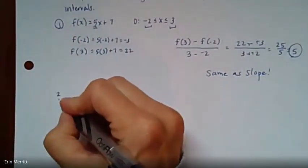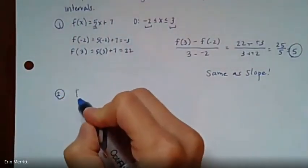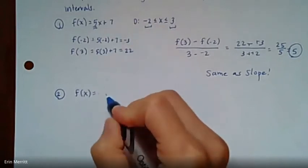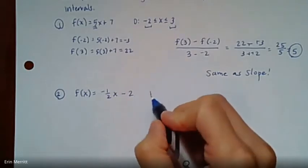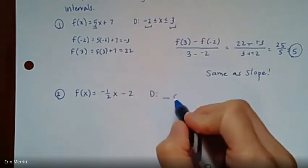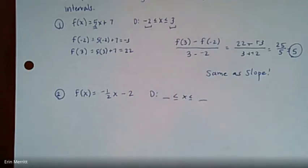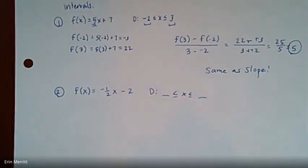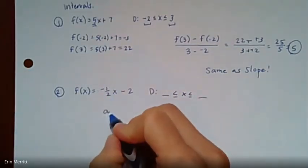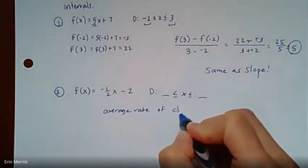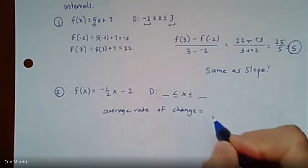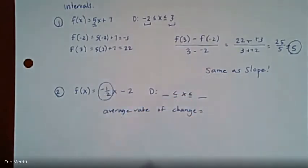So if for the second example, if I said, you know, f(x) equals -1/2 x minus 2, whatever domain I could possibly give you from here to wherever, it wouldn't matter at all. Your answer would be that the average rate of change would always be equal to that slope right there. So just be -1/2, right?